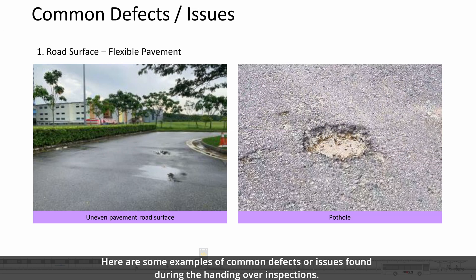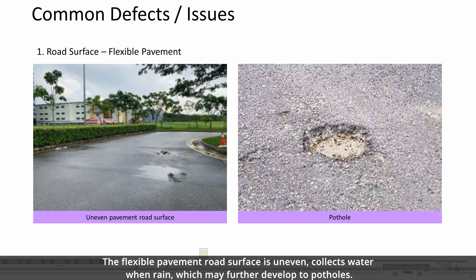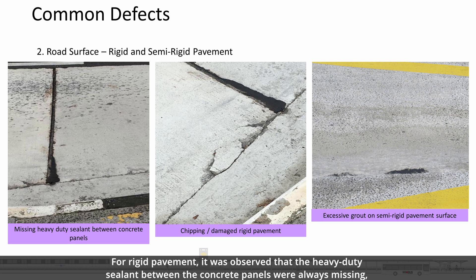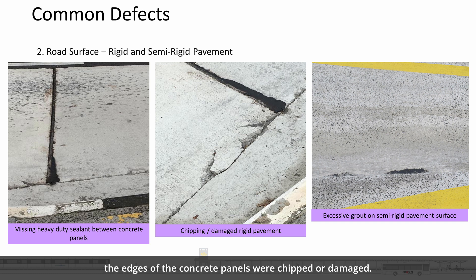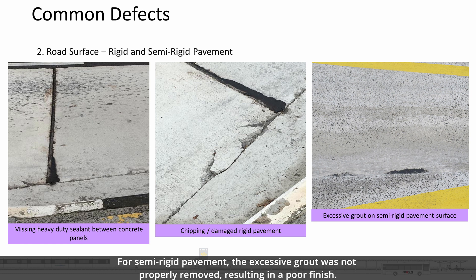Here are some examples of common defects or issues found during the handover inspections. The flexible pavement road surface is uneven, collects water when it rains, and these will develop into potholes. For rigid pavement, it was observed that the heavy-duty sealant between the concrete panels was often missing. The edges of the concrete panels were chipped or damaged. For semi-rigid pavement, the SFC route was not removed properly, resulting in a poor finish.